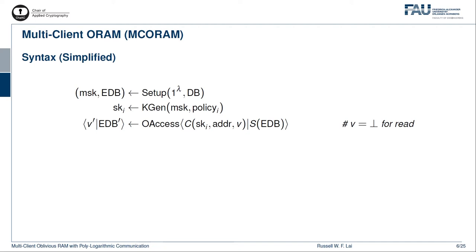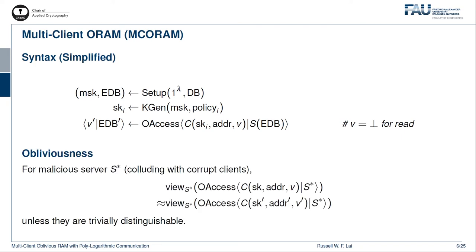The data owner can run the setup algorithm on a plaintext database and produce a master secret key and an encrypted database. He keeps the master secret key for himself and delegates the encrypted database to the server. For client i with access policy i, the data owner can run the key generation algorithm using his master secret key and produce a client secret key for client i. Using this secret key, client i can engage in the oblivious access protocol with the server, with the access instruction consisting of an address and a value v. Upon termination, client i should return a read value v', while the server updates the encrypted database. Obliviousness requires that, from the server's and other malicious clients' points of view, two oblivious accesses should be indistinguishable unless it is trivial.